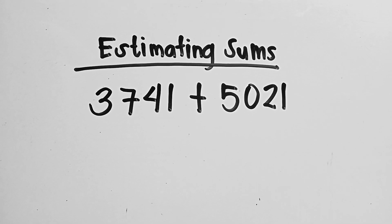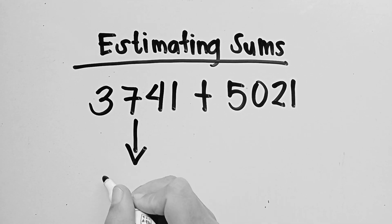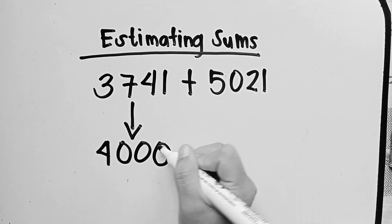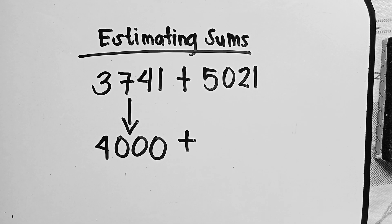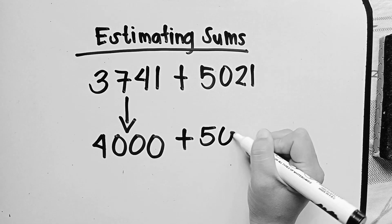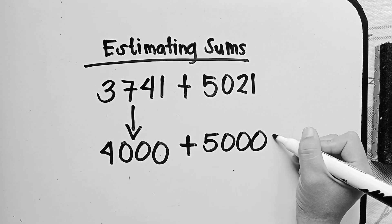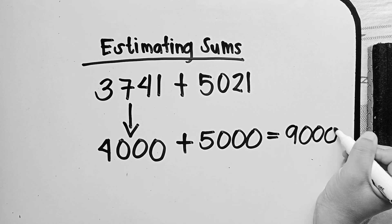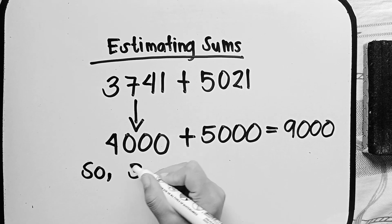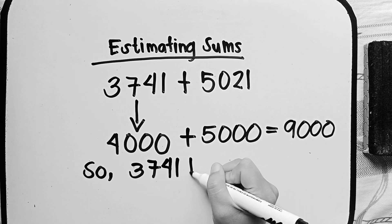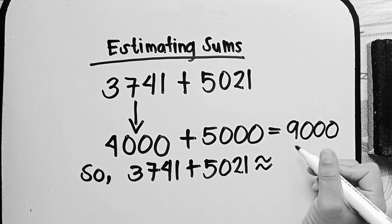Round to the nearest thousand. So, round 3,741 to the nearest thousand, we have 4,000. Plus the rounded nearest thousand of 5,021, which is 5,000. If we add the two, we'll have 9,000. So, 3,741 plus 5,021 is approximately equal to 9,000.